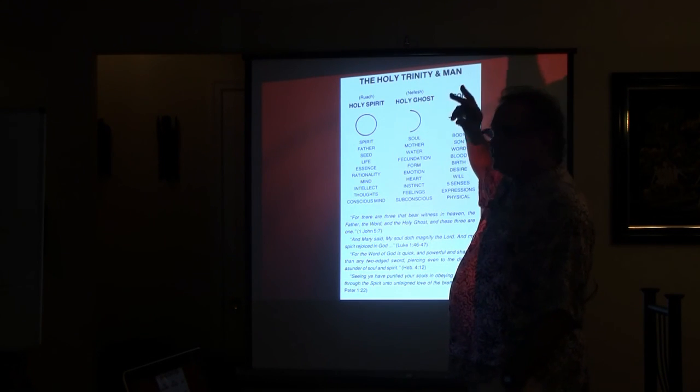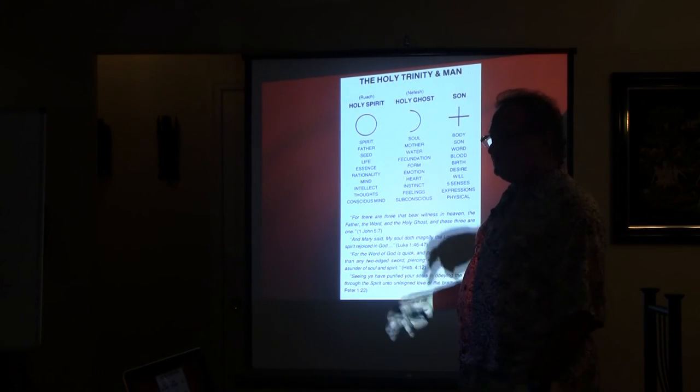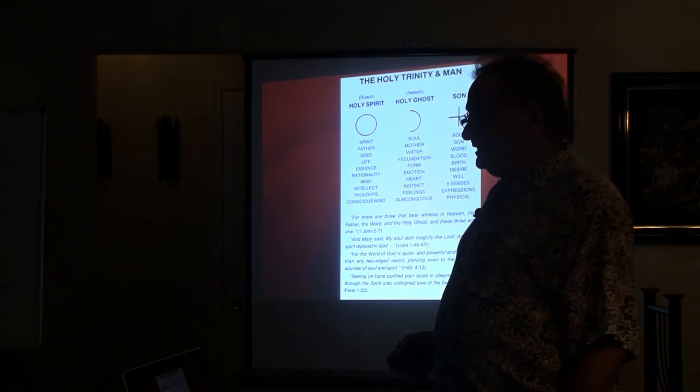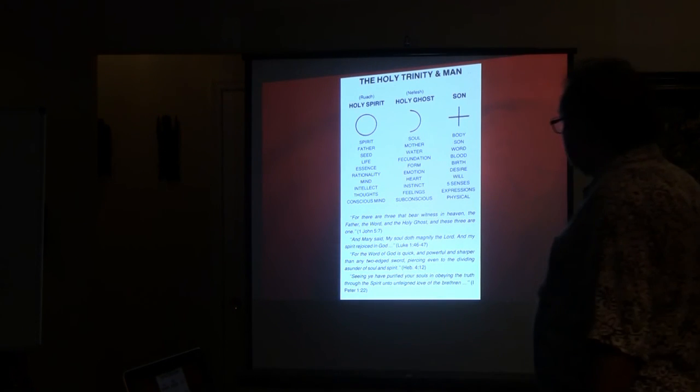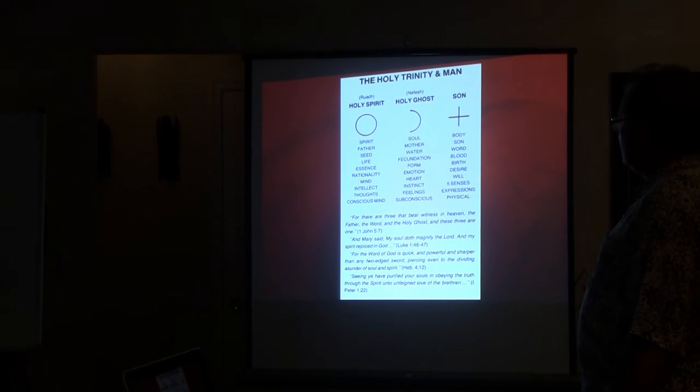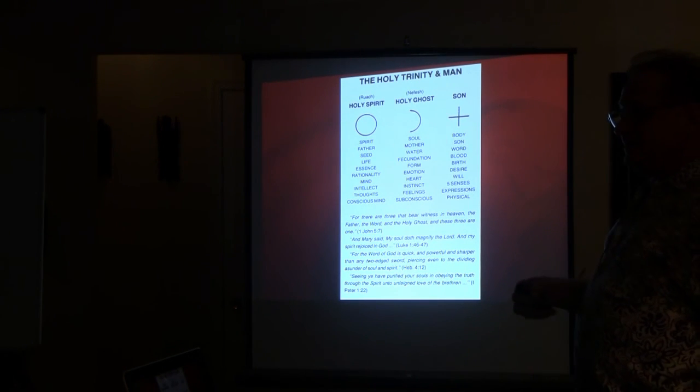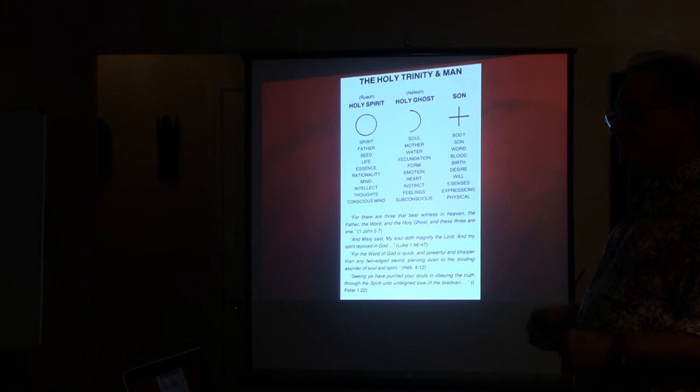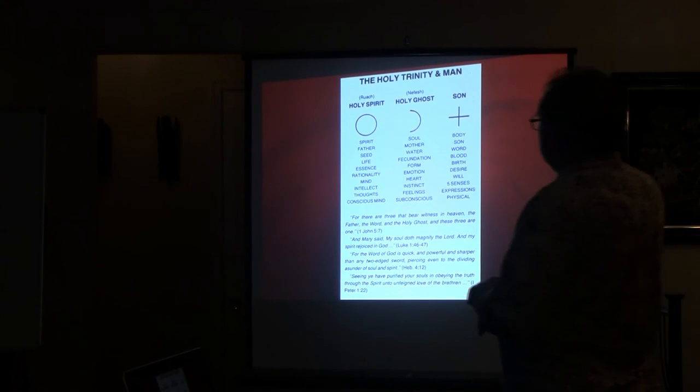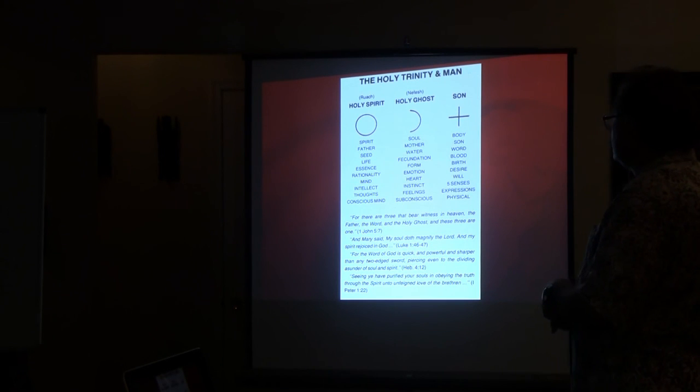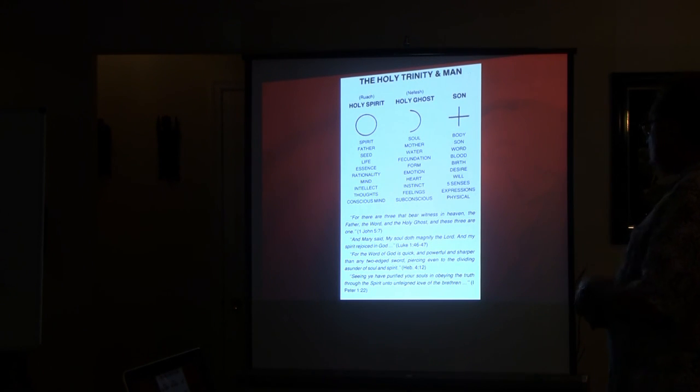If you look at the circle, that represents spirit. It represents conscious mind. It represents your rational being. It's your will. But the circle is only meaningful in terms of astrology when you put a dot in the center. In other words, you've got the centralized focus of that conscious being. And that's where we get the symbol for the sun. The circle represents the spirit, the father, the seed. The seed represents the life force itself, essence of all things. It's rational. It's the mind. It's intellect. It's thought. It's conscious mind.